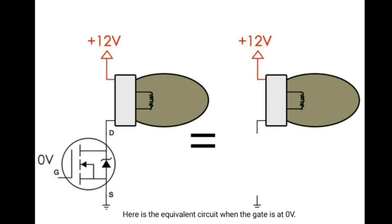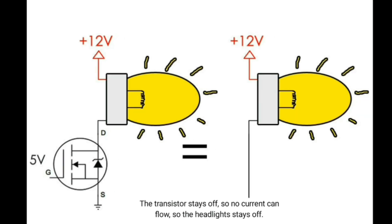Here is the equivalent circuit when the gate is at 0 volts. The transistor stays off so no current can flow, so the headlight stays off. Here is the equivalent circuit when the gate is at 5 volts. The transistor turns on and starts acting like a very low resistance current path so current can flow. Current will flow from the power supply through your load into the drain of the transistor and then out from the source of your transistor into the ground. So when the transistor is on, your gadget will turn on too.